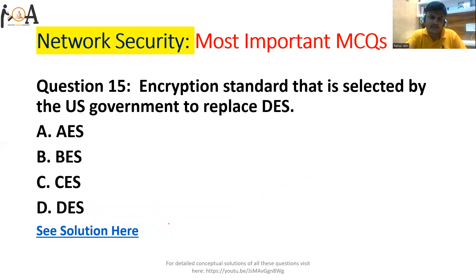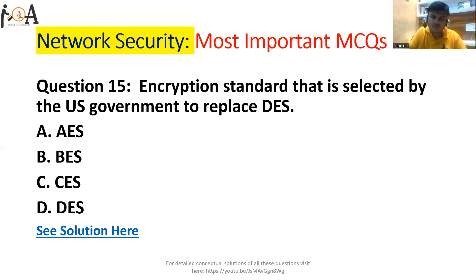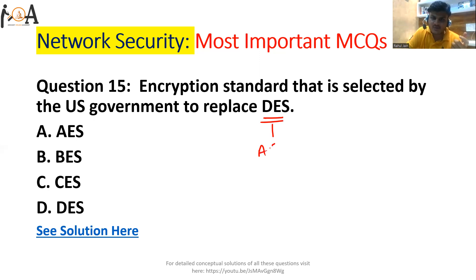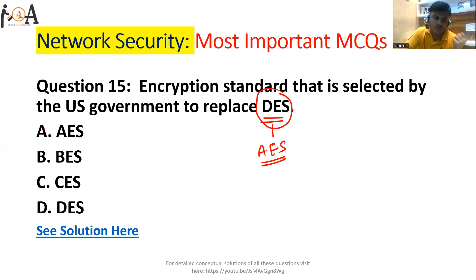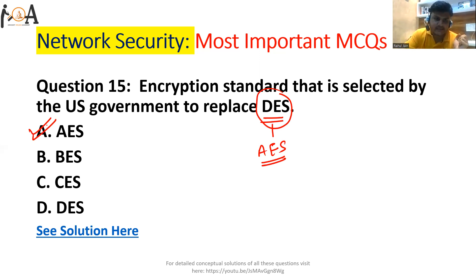Question number 15: The encryption standard selected by the U.S. government to replace DES. The U.S. government moved ahead of DES to AES — Advanced Encryption Standard. AES is an advanced version of DES with more security features. So AES is the correct answer, option A.